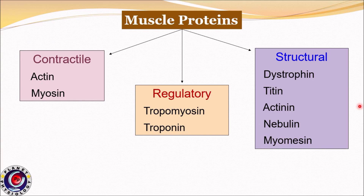All these muscle proteins can be grouped into three categories: contractile proteins, which include actin and myosin; regulatory proteins, which include tropomyosin and troponin; and structural or anchoring proteins, which include dystrophin, titin, actinin, nebulin, and myomesin.